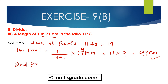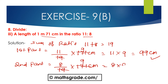The second part — consequent is 8 — is 8 divided by 19, multiplied with 171 centimeters. Canceling 19 and 171: 19 multiplied by 9 is 171, so 8 multiplied by 9 is 72 centimeters. So dividing the length of 1 meter 71 centimeters in the ratio of 11 is to 8, we get 99 cm and 72 cm.